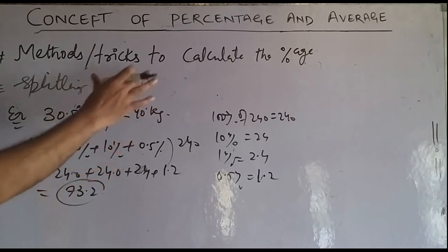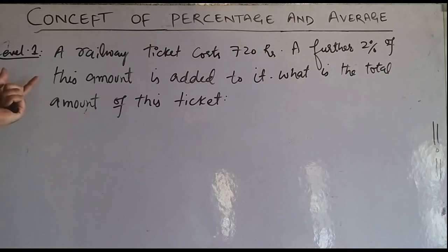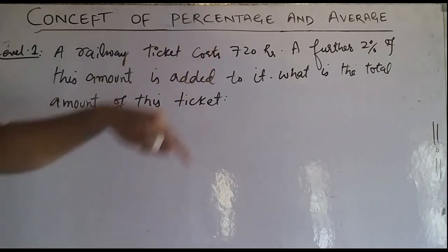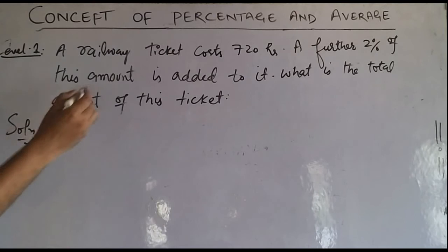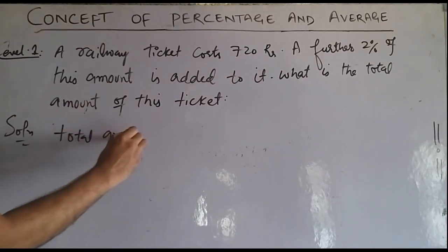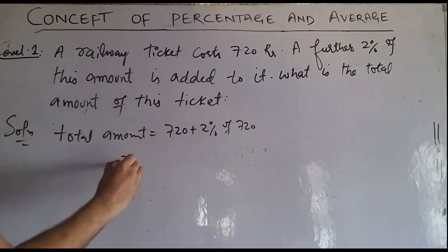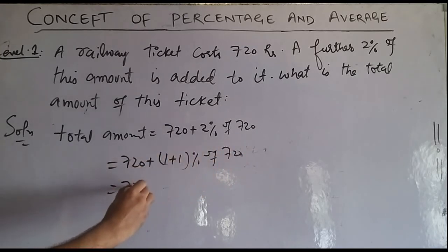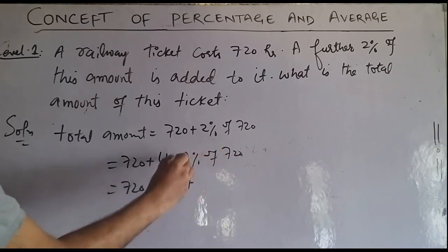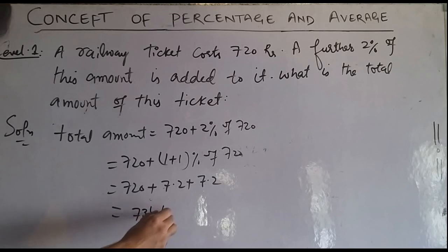Now let's look at Level 1 type exam questions. If a railway ticket costs 720 rupees and a 2% surcharge is added, what is the total amount? Total = 720 + 2% of 720. 2% of 720 = 14.4. So total = 720 + 14.4 = 734.4 rupees.